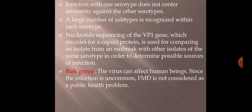Infection with one serotype does not confer immunity against the other serotypes. A large number of subtypes are also recognized within each serotype. Nucleotide sequencing of the VP1 gene, which encodes for the capsid protein, is used for comparing an isolate from an outbreak with other isolates of the same serotype in order to determine the possible source of infection.